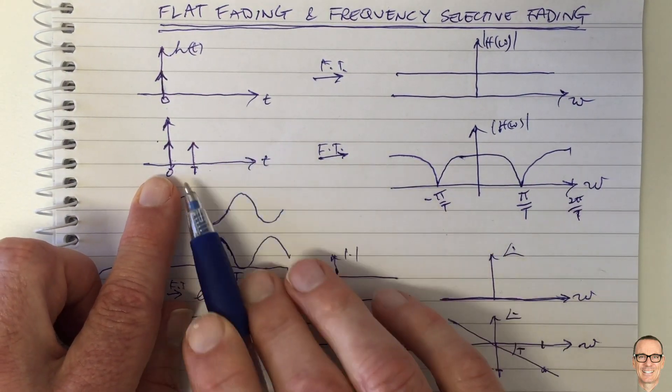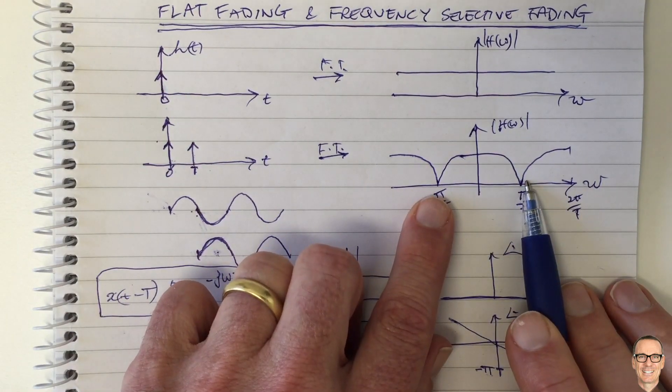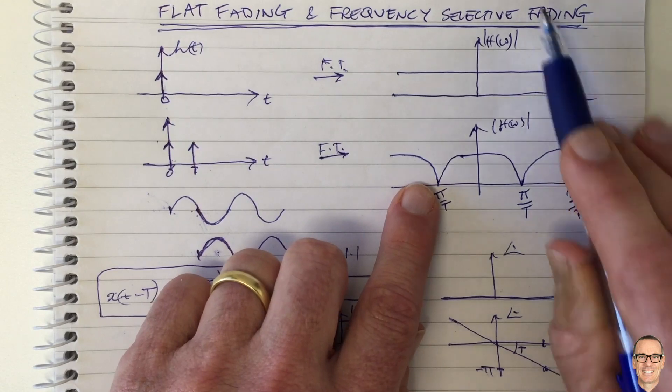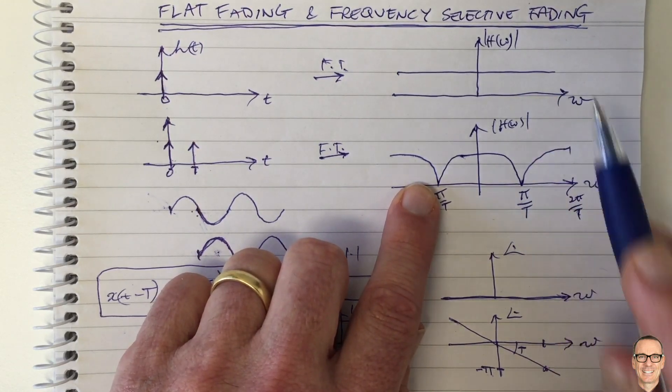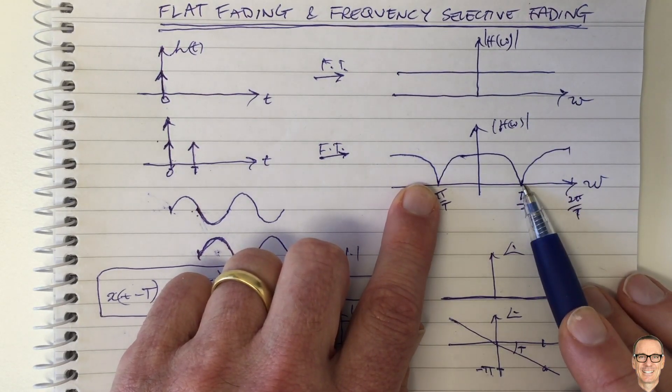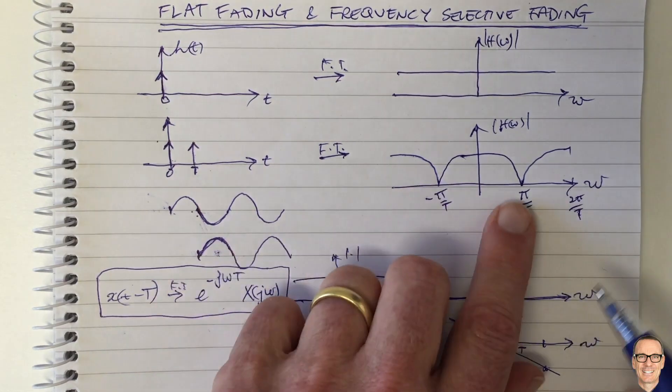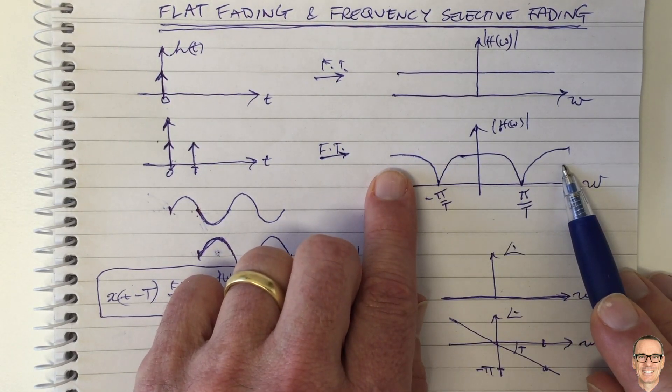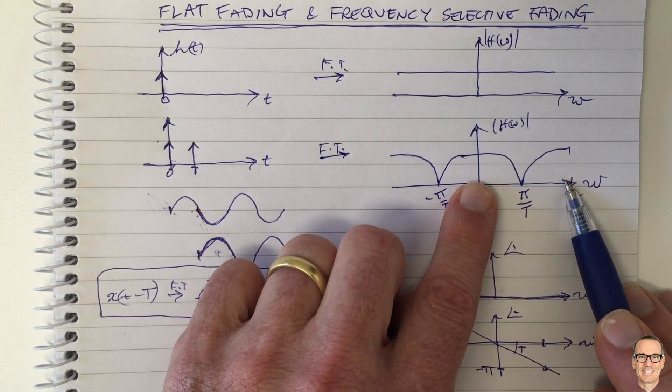Of course, in mobile communications, there's many more paths. I'm just drawing two. So when is your channel, this channel here overall is frequency selective. So these are the difference between frequency flat and frequency selective. Another important thing though, is you can have a frequency selective channel, but you may not be using all of this bandwidth for your signal.